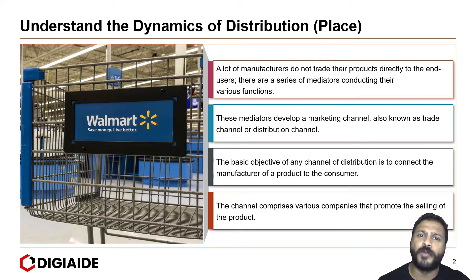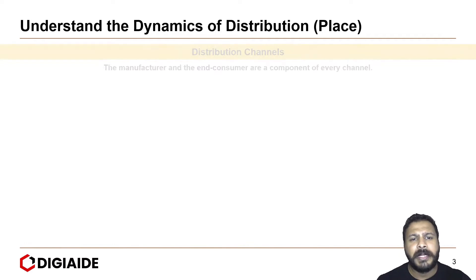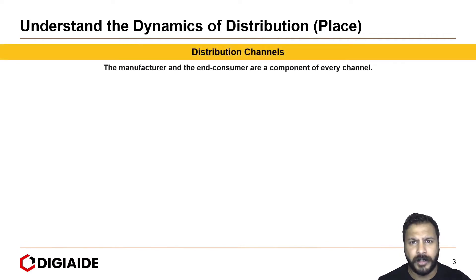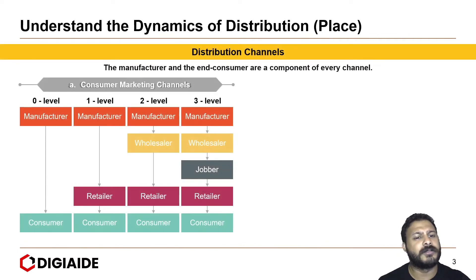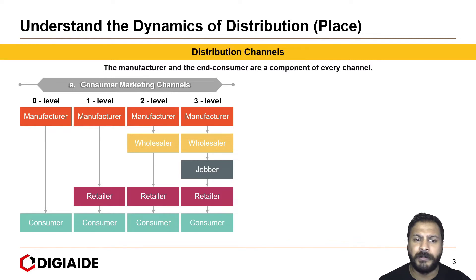The channel comprises various companies that promote the selling of the product. Walmart is one of those mediators that gets us the final product. Let's take a bird's eye view of a typical distribution channel — a consumer marketing channel which entails the manufacturer at one end and the consumer at the other, and several middlemen depending on the levels of distribution.